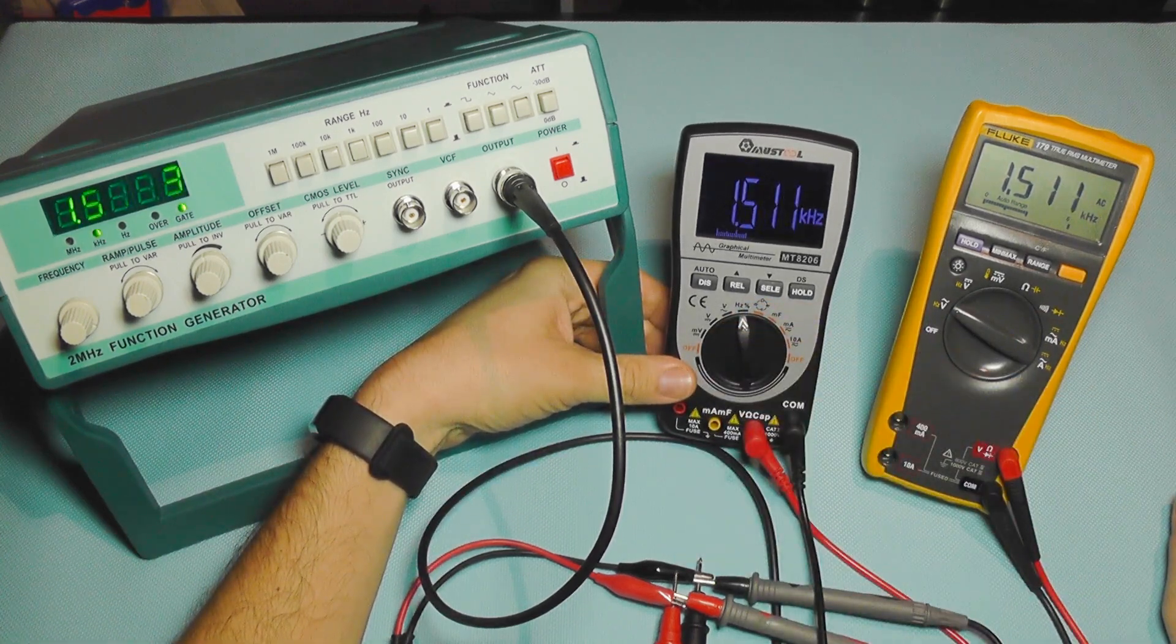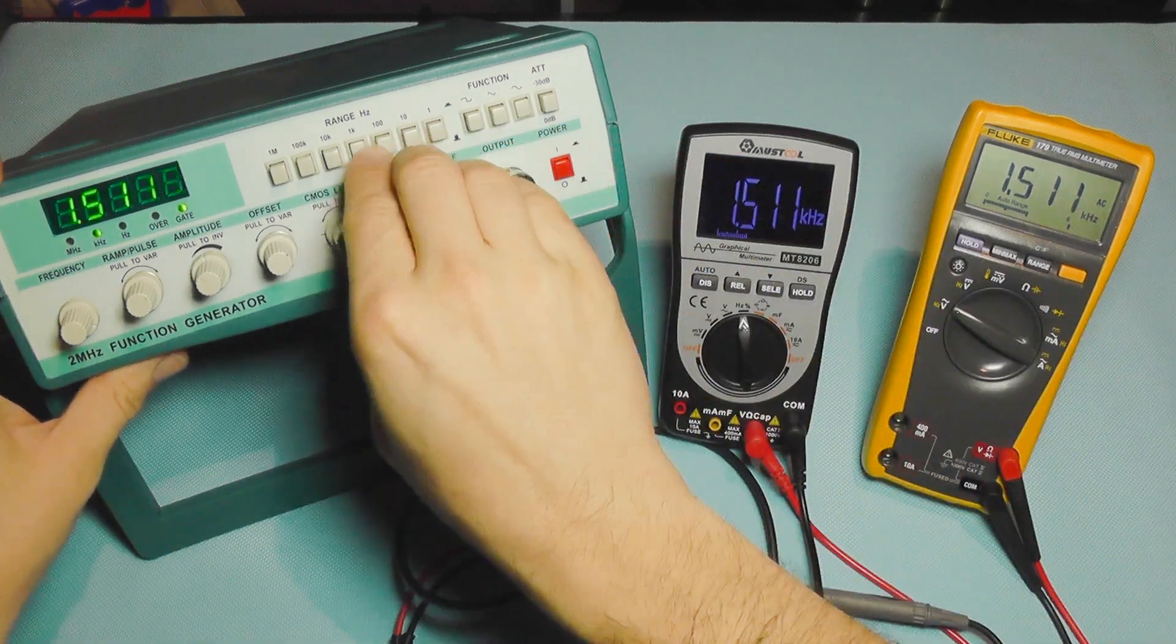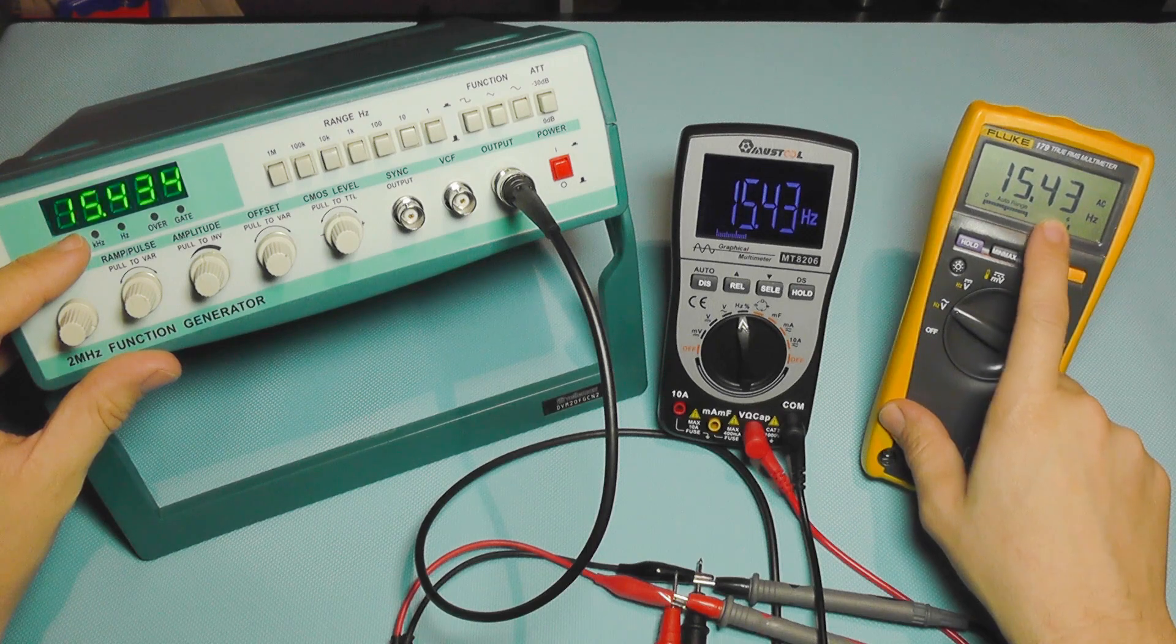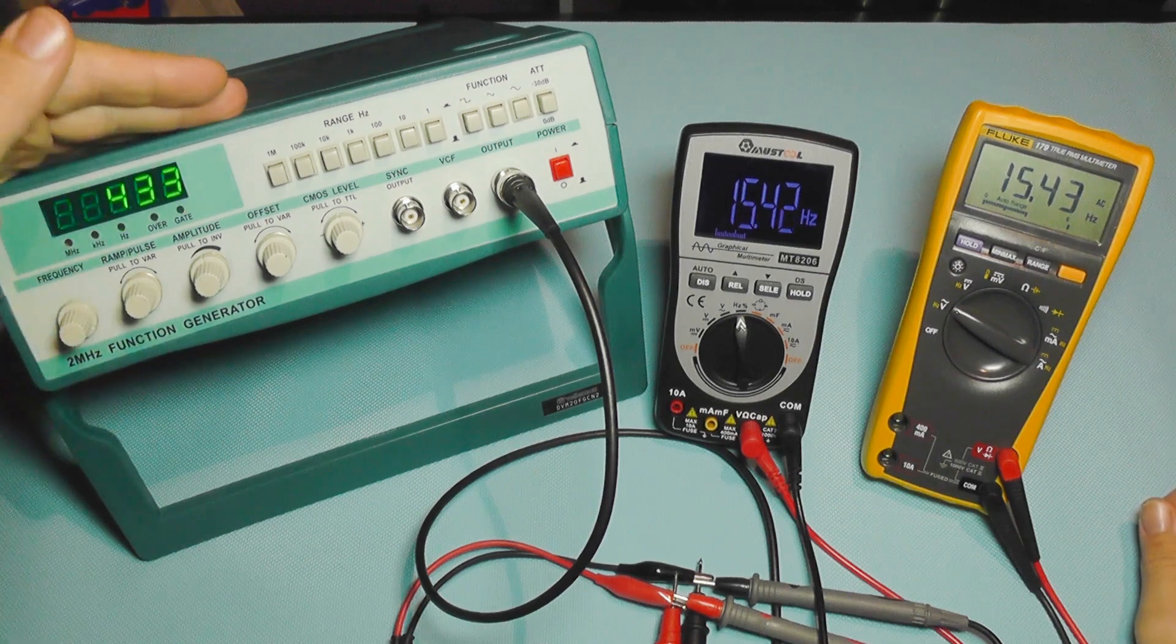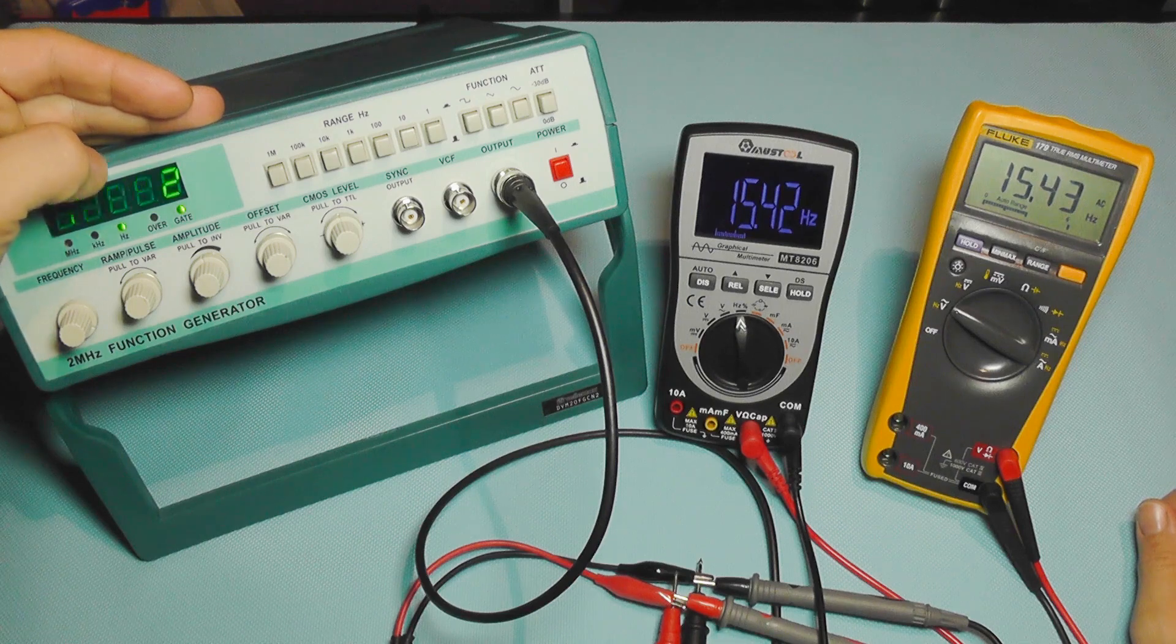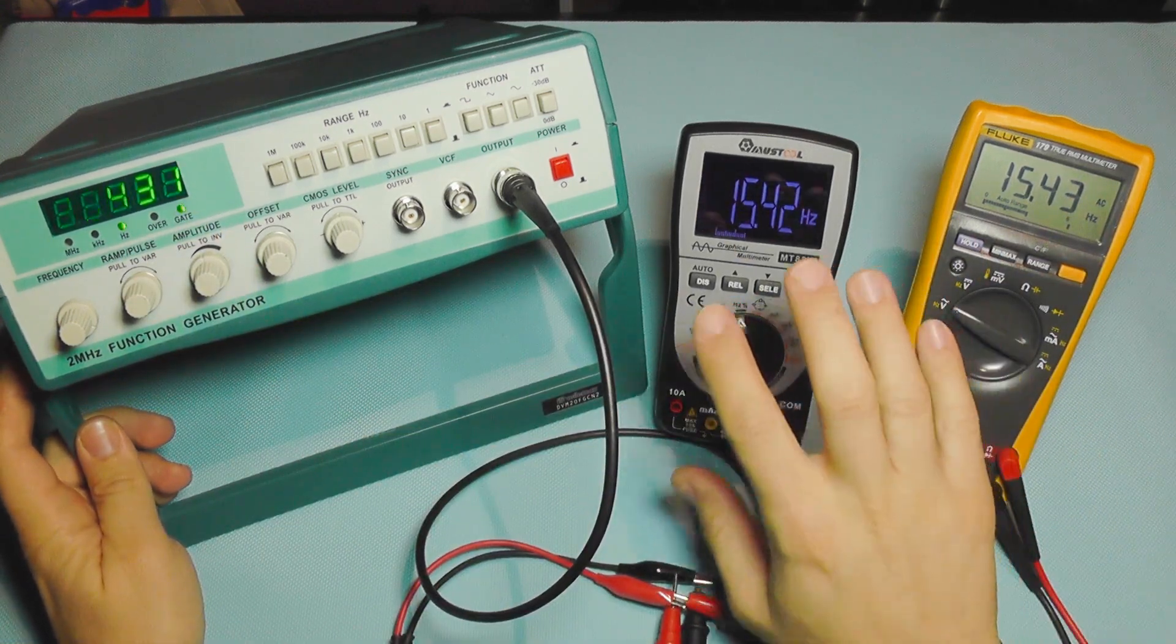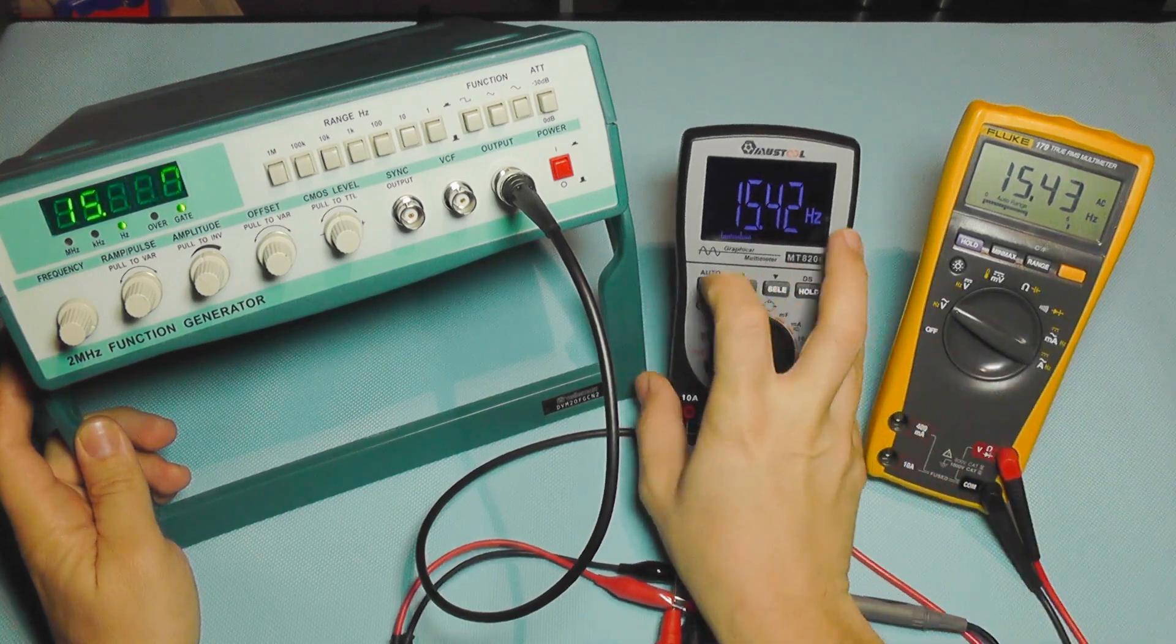So this shows frequency and I'm going to do the same for the Mass Tool. The frequency is identical on both meters. I'm going to try low frequency. Now it's 15 Hertz only. You can see 15.43 and 15.43, so they are almost identical, while the Fluke is closer to the signal generation. There is a small difference between them but not huge.